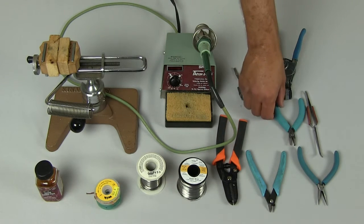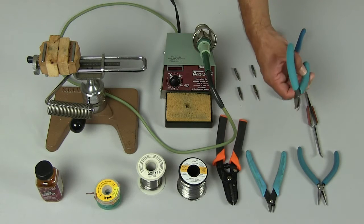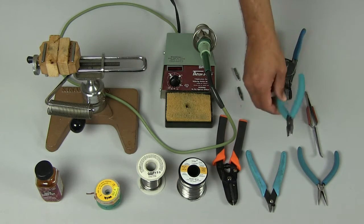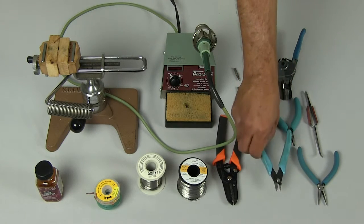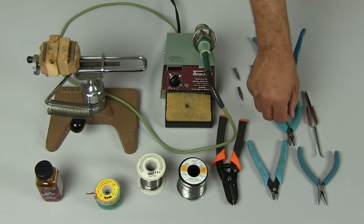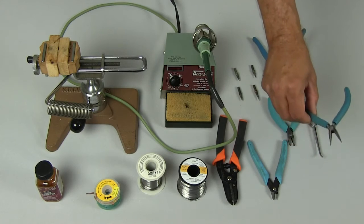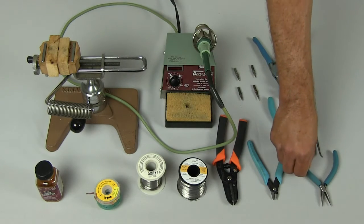Next we have a selection of various cutting tools. This is an angled flush cutter, and a flat sided flush cutter, and also we want to make sure we have flat nose, needle nose type pliers.